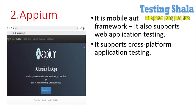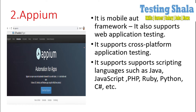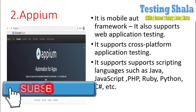As it is an extension of Selenium, Appium is also supported as a scripting tool across different programming languages. It supports Java, JavaScript, PHP, Ruby, Python, C#, and many more programming languages.